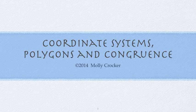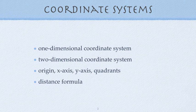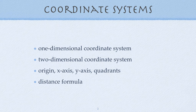Let's talk about coordinate systems, polygons, and congruence. We have one-dimensional coordinate systems and two-dimensional coordinate systems, and both of these contain an origin and an x-axis. The two-dimensional coordinate system also contains a y-axis and quadrants. Then we're also going to talk about the distance formula.